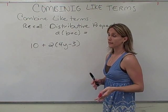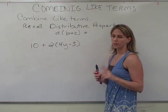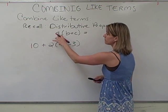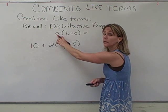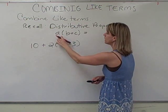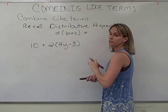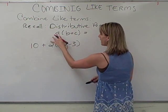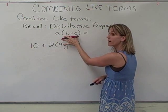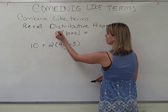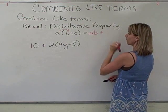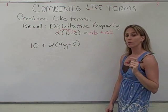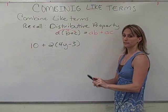Now our next example is going to use the distributive property. So let's remember what that is. The distributive property says, if you have something, could be a variable, could be a number, could be anything, outside two terms inside parentheses that are separated by a plus or minus, A times the quantity B plus C is equal to A times B plus A times C. And we're going to need that for this next example.